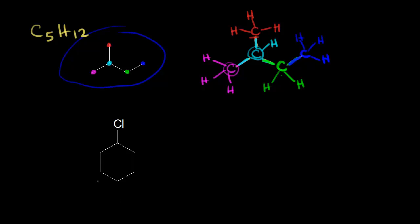Let's do another one — let's look at this next bond line structure. Let's focus on our carbons. We'll start with the carbon in magenta, which is bonded to two other carbons: the top carbon in red and a carbon in light blue. Continuing around the ring: a carbon in green, a carbon in dark blue, and one more carbon. The carbon in red is bonded to a chlorine. So let me show that — there's our chlorine.